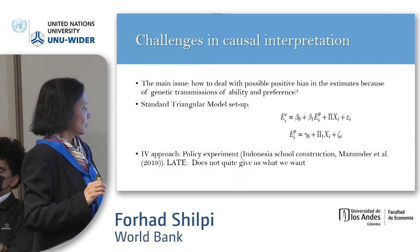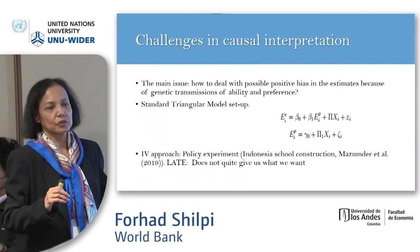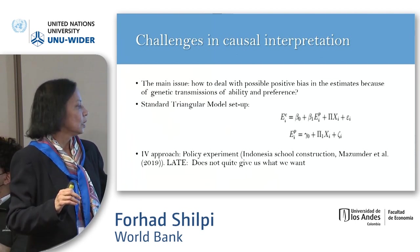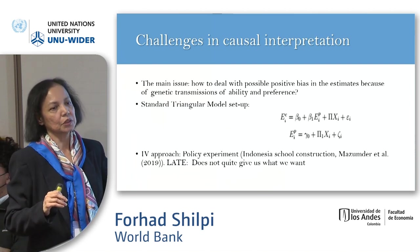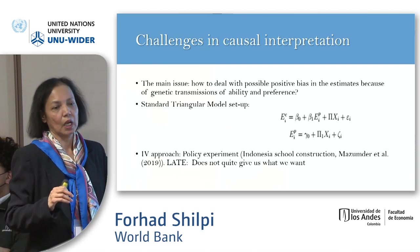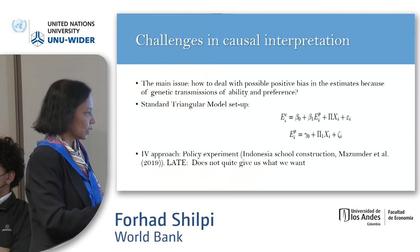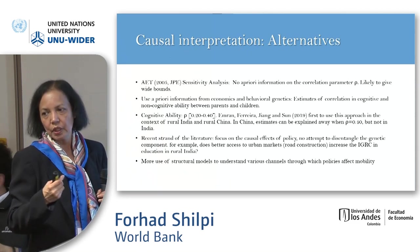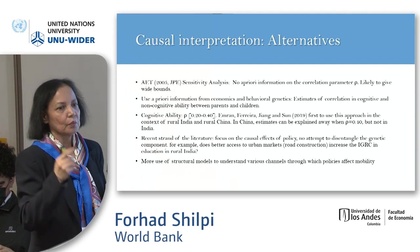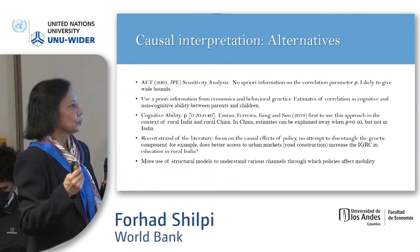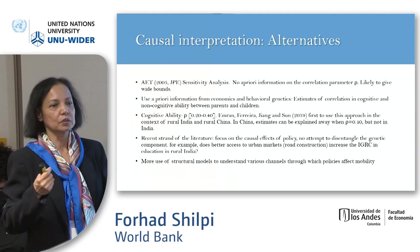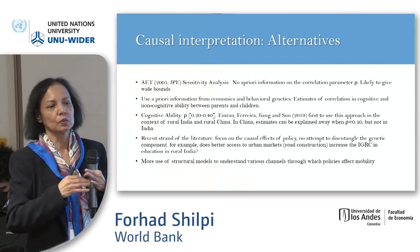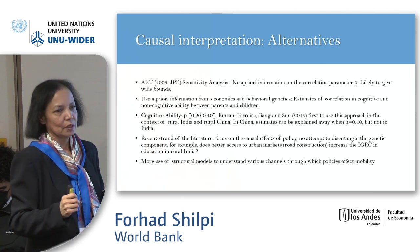For causal interpretation, you actually need some exogenous variation in the parents' generation. There are a couple of new papers which look at interventions like school construction that shifted mothers' education and looked at how that affected children's education — that's one approach. The second approach is basically doing some sensitivity analysis. Chico has a paper on this: the idea is that if we know the correlation between parents and children in terms of ability, we can use it to bound the estimates and tell you how much it matters.